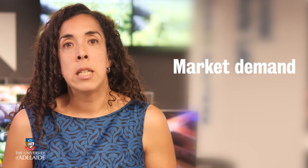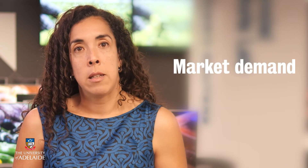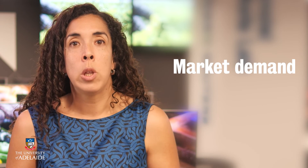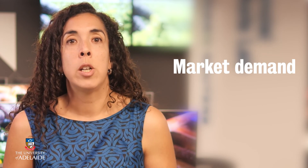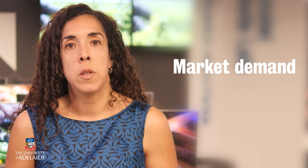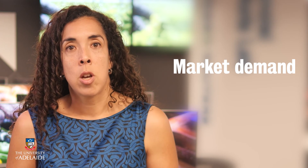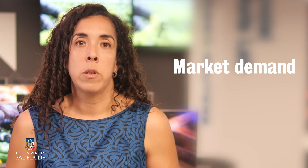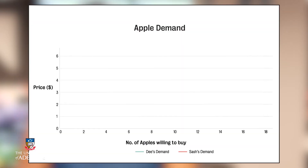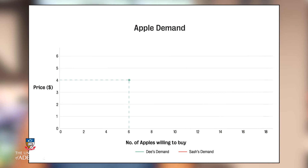The market demand is the sum of all individual demands. In this next example, we'll look at what happens when there are two consumers, D and Sash, who are also consumers of apples. Here is D's demand for apples. If the price of apples is $4, D will purchase six apples. If the price of apples is $2, D will purchase eight apples.